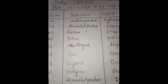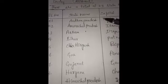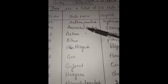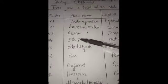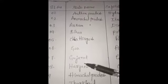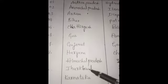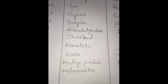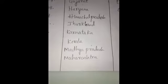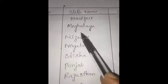Dear students, once again I shall call out the state names. Andhra Pradesh, Arunachal Pradesh, Assam, Bihar, Chhattisgarh, Goa, Gujarat, Haryana, Himachal Pradesh, Jharkhand, Karnataka, Kerala, Madhya Pradesh, Maharashtra, Manipur.